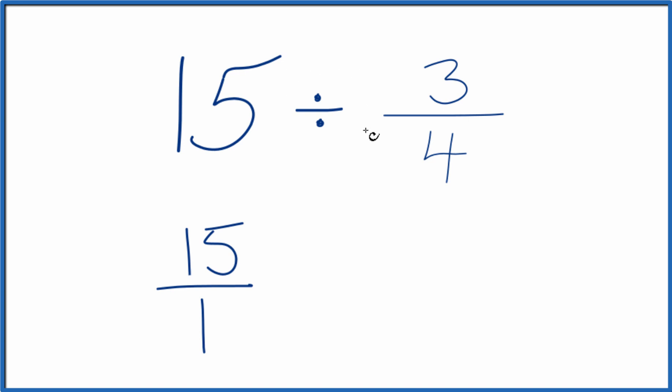For the division, instead of dividing, let's multiply by the reciprocal of 3 fourths. So when you take the reciprocal of a fraction, you move the numerator to the bottom, the denominator up to the top. So we have 4 thirds. 4 thirds is the reciprocal of 3 fourths.